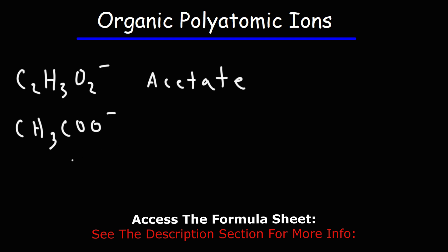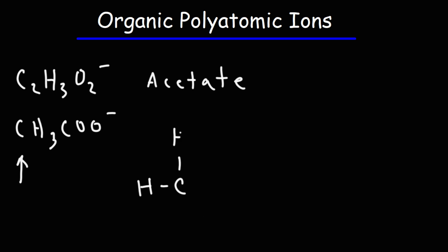To draw the Lewis structure, we can start with this carbon. Carbon, in the form of CH3, has three hydrogen atoms, and hydrogen can only form one bond. Carbon has four valence electrons, so it likes to form four bonds.